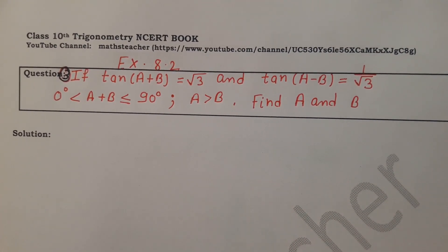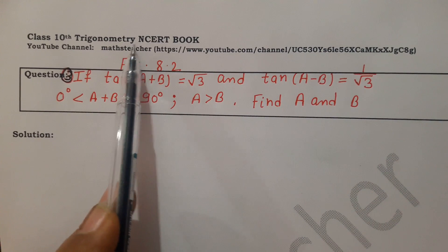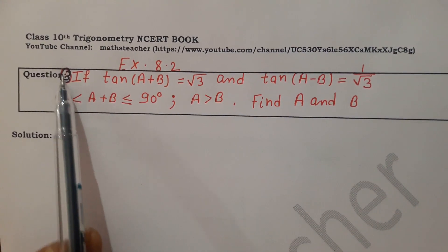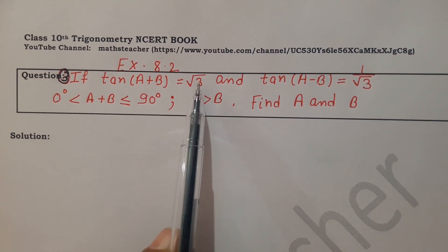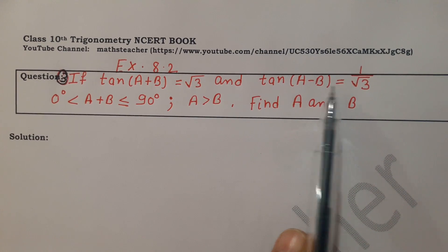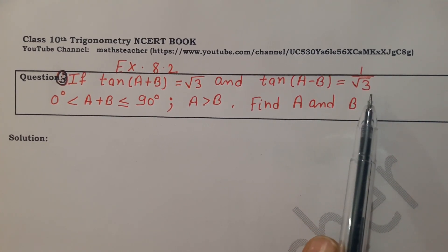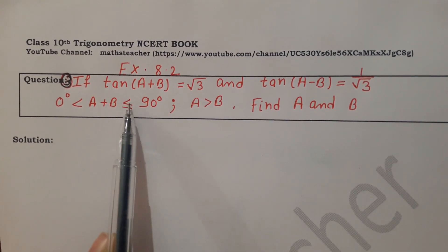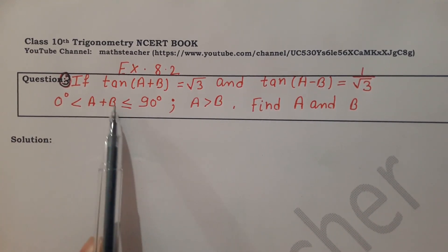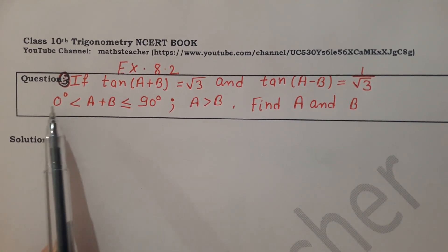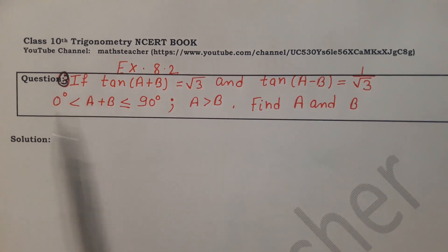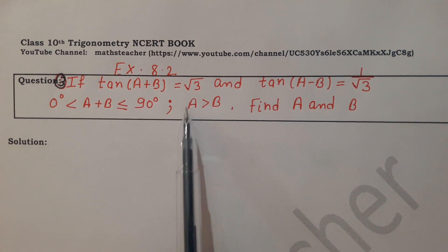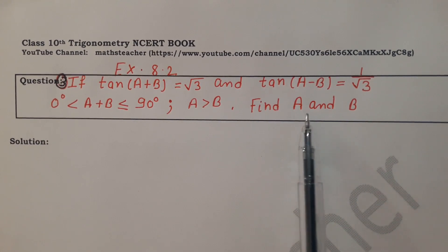Hello viewers, today we will solve Chapter Trigonometry, NCERT book Exercise 8.2, Question Number 3. The question states: if tan(A+B) = √3 and tan(A-B) = 1/√3, with the condition that A+B is greater than 0 and less than or equal to 90 degrees, and A is always greater than B, then we have to find A and B.